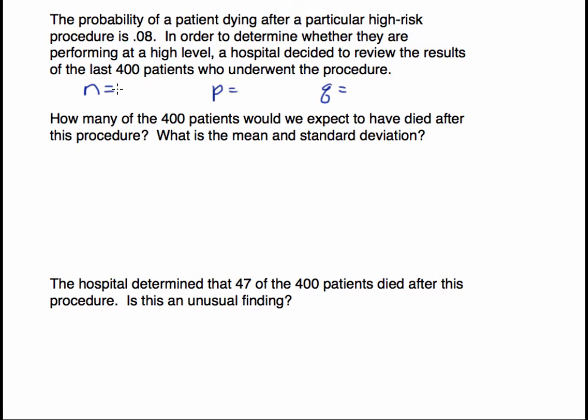Now let's figure out what these values are. N is the number of trials, and in this case, each trial is going to be one surgery. So we have 400 patients or 400 surgeries that we're looking back on. The probability of success - this is where success doesn't mean success as we usually mean it.